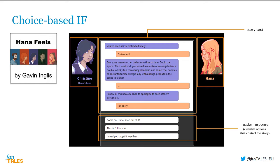You need to consider the dialogue options carefully, because each option may have a different effect on Hannah's emotions. We call Christine the player character, as the reader roleplays her part in the story. Hannah is the main character in the story, but the reader cannot control her actions, so we call her a non-player character.